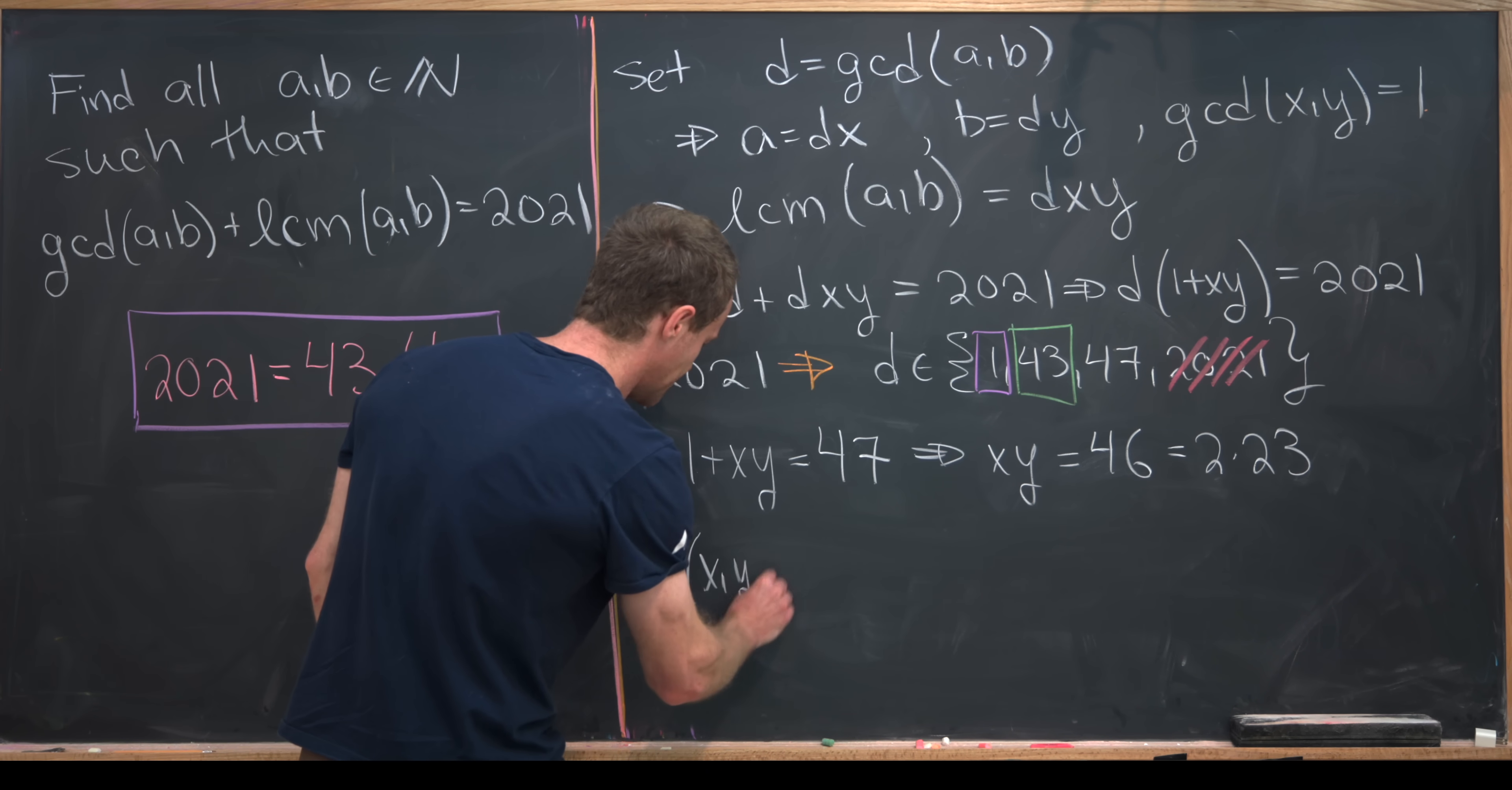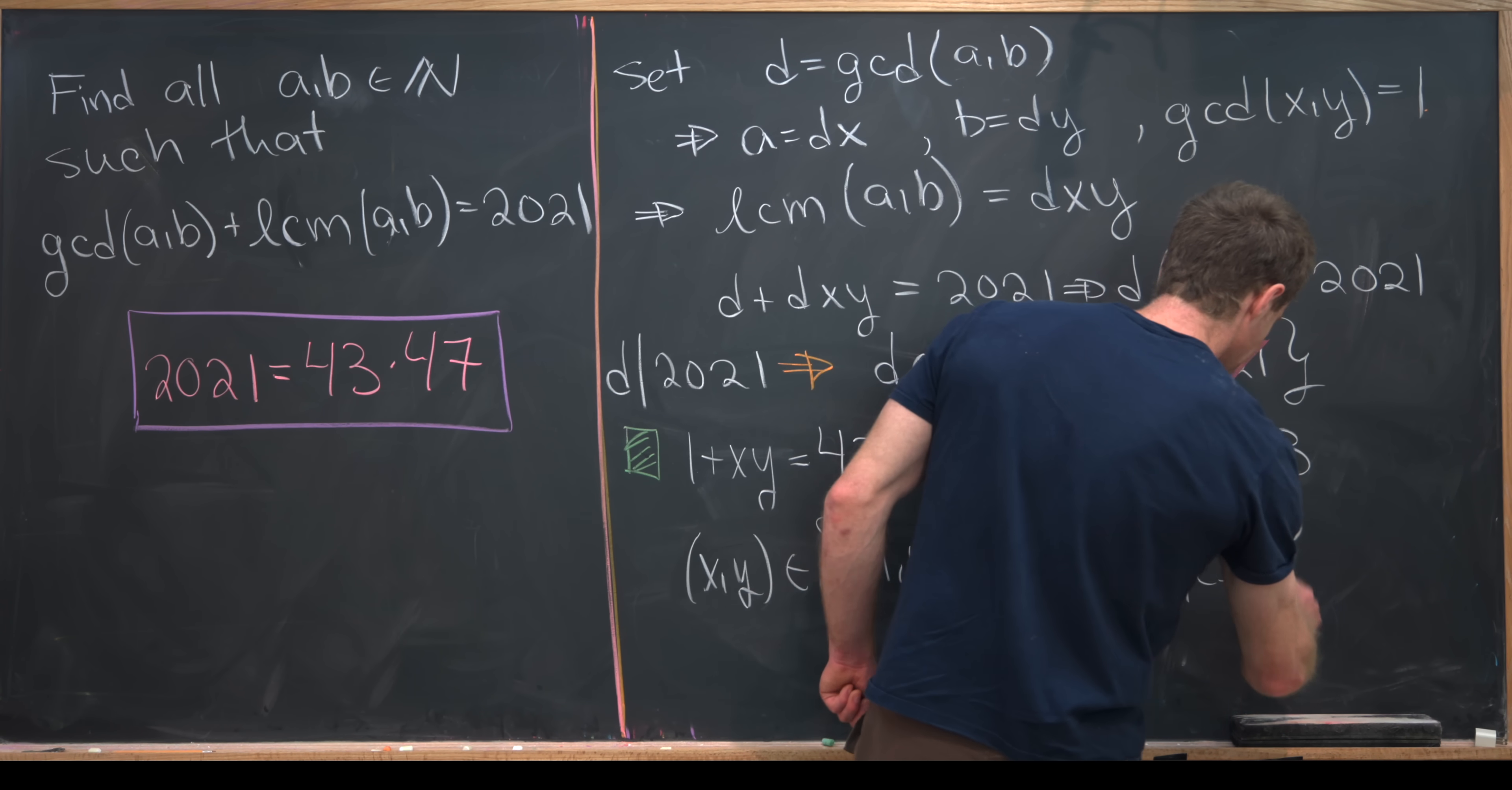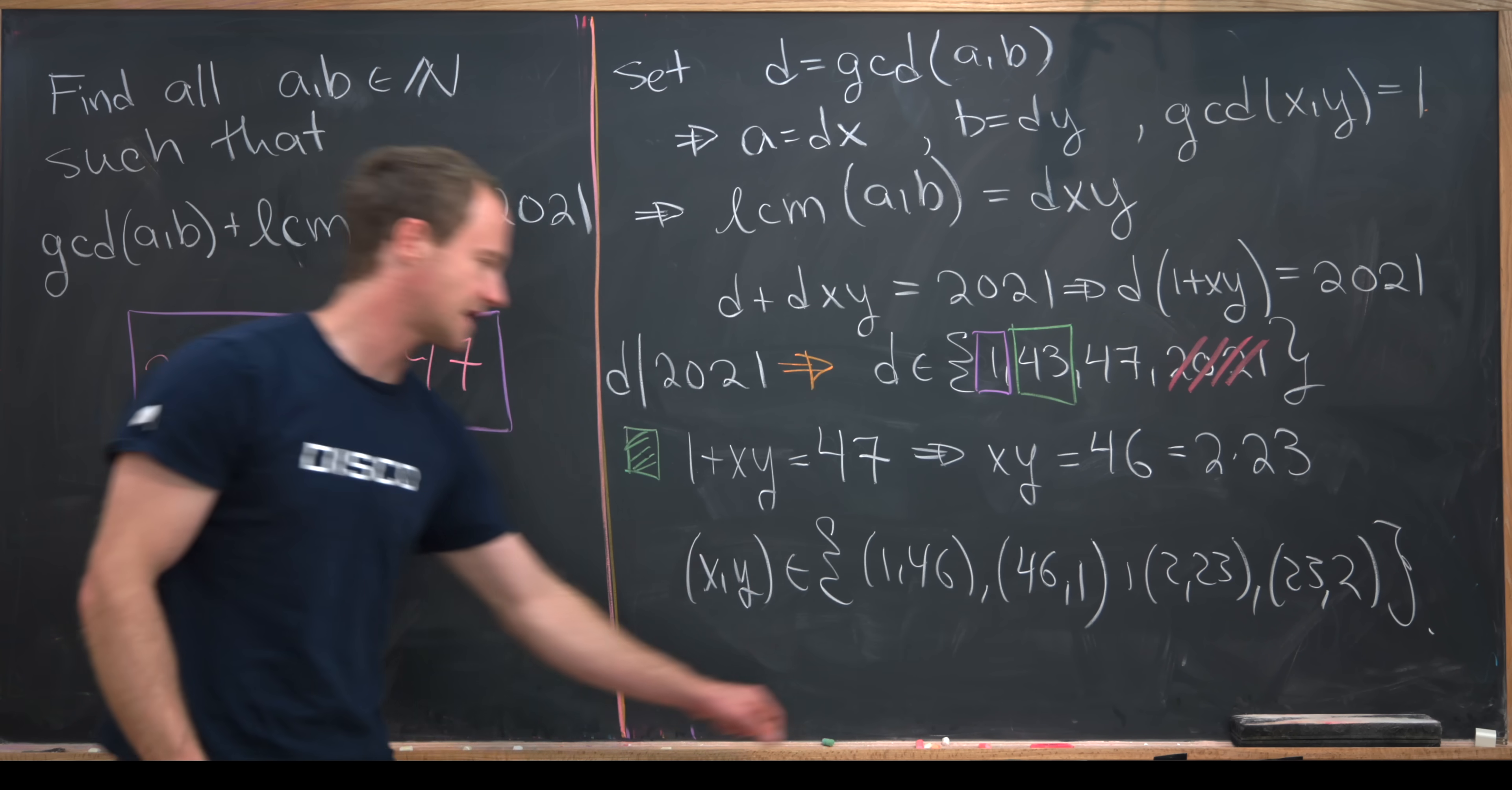That gives us a lot less cases for the ordered pairs X and Y. We can list them all. Now XY must come from the following set: 1, 46, its reflective pair which is 46, 1, then 2, 23 and its reflective pair 23, 2. We've taken care of this purple case and this green case. Now let's take care of our last case, which will be this red case.